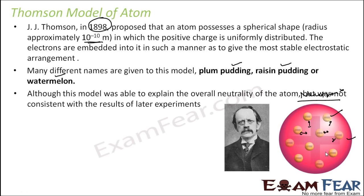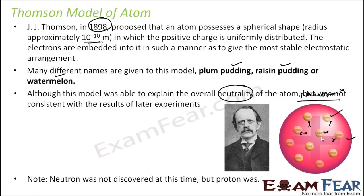This model could explain the overall neutrality of the atom, because the whole atom was positive and it had negative electrons — overall it was neutral. But it was not consistent with later experimental results, as we will see. Please note that the neutron was not discovered at this time, so there is no neutron in this model.